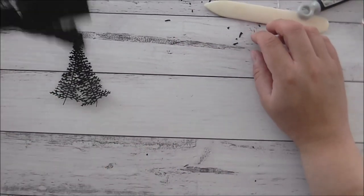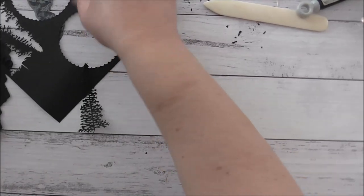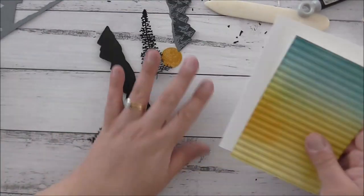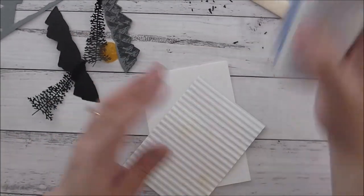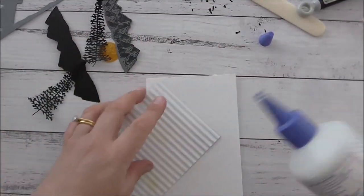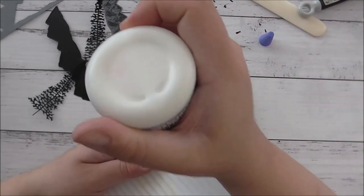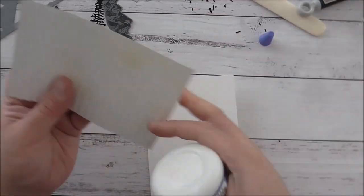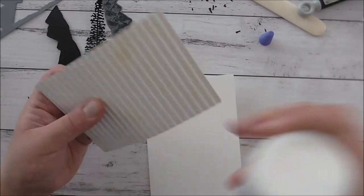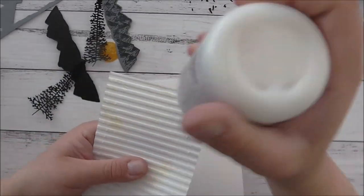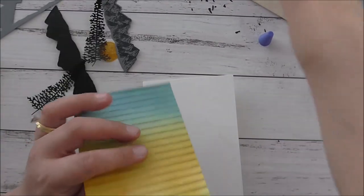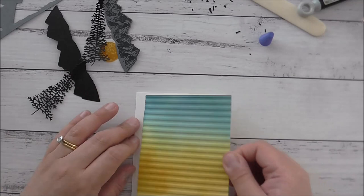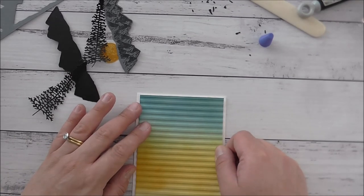I'm going to bring in my card base and all of my little bits and pieces and we're just going to glue everything down. Now I'm going to leave mine without a sentiment. I'm going to keep it blank so I can use this as a masculine card or a thank you card. Whatever you want it to be, it will be really cute. I'm just going to stick this embossed piece down.